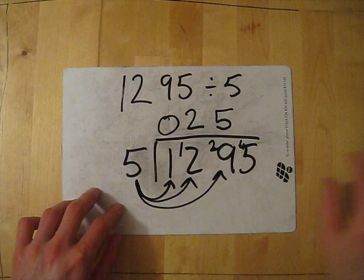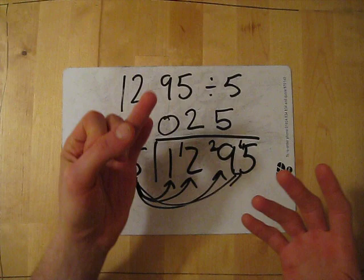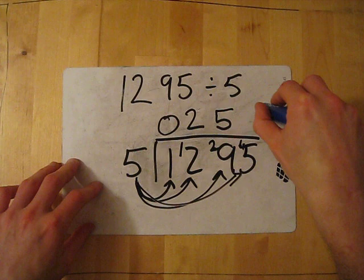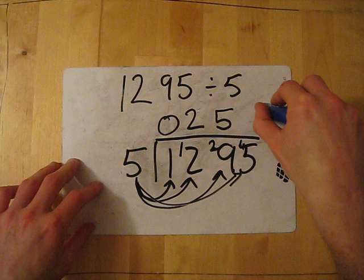And then the final one, 5 into 45, gives me 5, 10, 15, 20, 25, 30, 35, 40, 45. That fits in exactly 9 times, so my answer is 259.